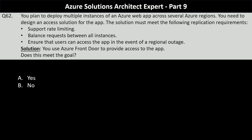Question number 62. You plan to deploy multiple instances of an Azure web app across several Azure regions. You need to design an access solution for the app. The solution must support rate limiting, balance requests between all instances, and ensure that users can access the app in the event of a regional outage. The proposed solution is to use Azure Front Door. Does this meet the goal?